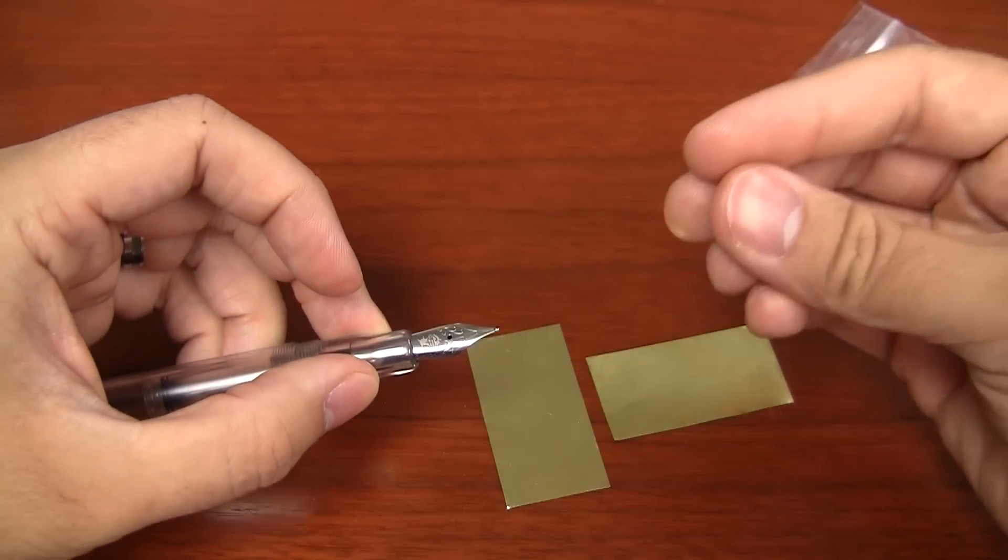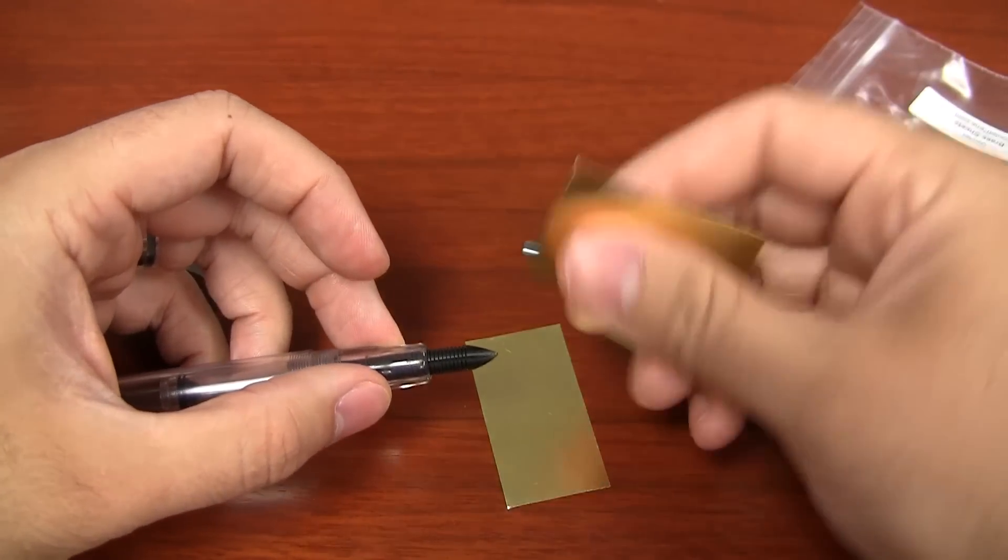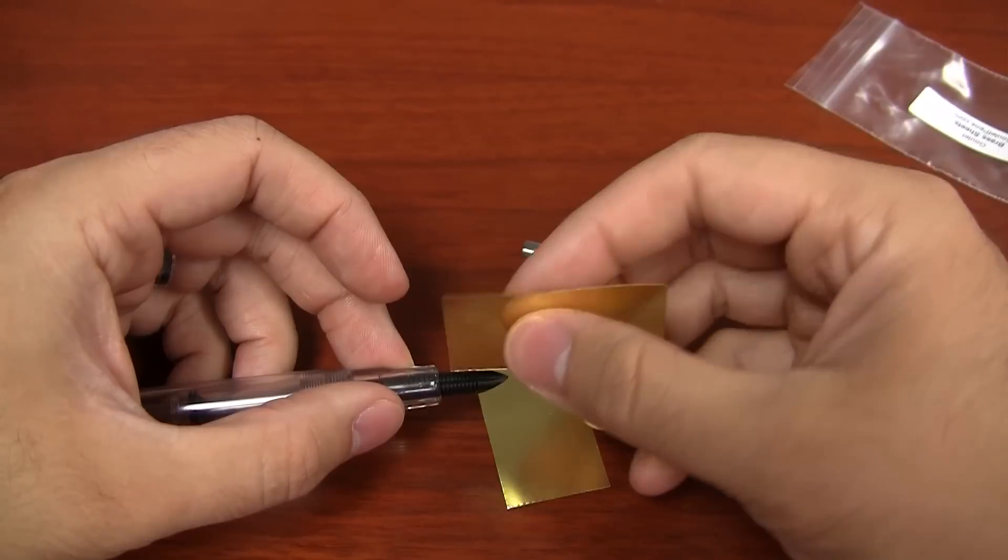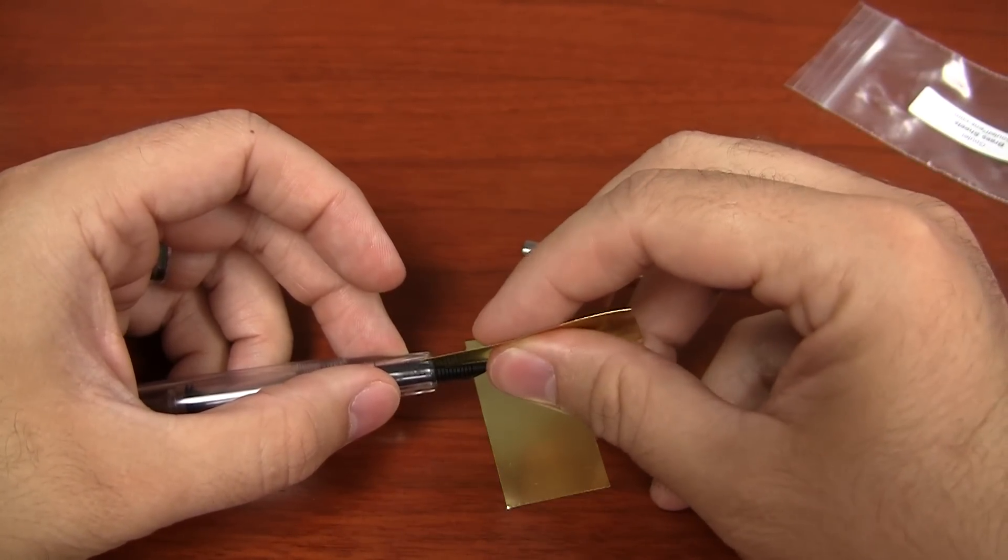Not only that, but when you can remove the nib, then you can get to the feed as well, and you can use the brass to make sure that there is no physical obstructions in your feed too.